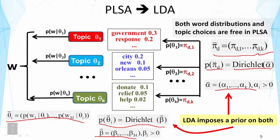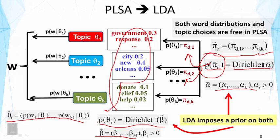Once we impose these priors, the generation process changes. We start by drawing pi from this Dirichlet distribution, and this pi tells us the probabilities over topics. Then we use pi to choose which topic to use — this is very similar to the PLSA model. Similarly, rather than having the word distributions free, we draw them from the Dirichlet distribution, and then we further sample a word from the chosen topic distribution. The rest is very similar to PLSA.